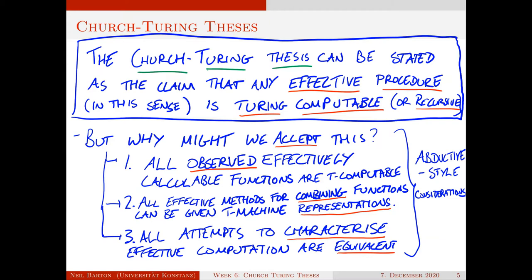So why might we accept this? There has been a lot of work done on this, so I won't summarize all of it, but I think the following three considerations have been especially influential — these are also discussed in the Stanford Encyclopedia article on the Church-Turing thesis. First: every function that we've come up with an effective calculation procedure for has also turned out to be Turing-computable. We can think of ourselves as listing all the functions and checking if they're Turing-computable — it turns out they are. Second: any effective methods we've come up with for combining effective functions can be given a Turing machine representation — if you give me a way of bolting together two effective procedures, I can find a Turing machine that corresponds to that process.